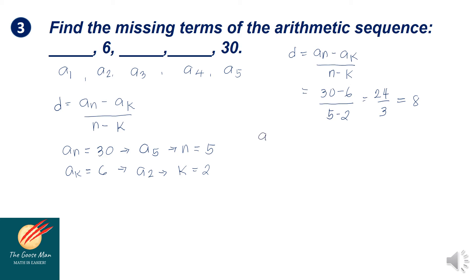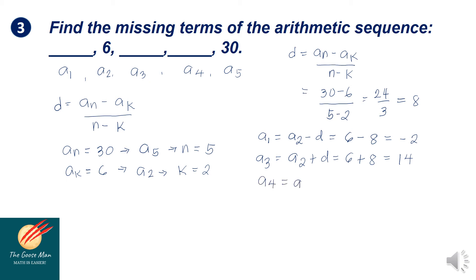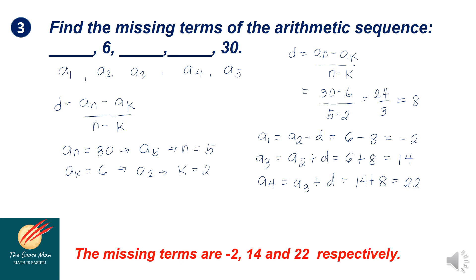To get the first term, that is a sub 2 minus the common difference: 6 minus 8 equals negative 2. Moving to a sub 3: a sub 3 equals a sub 2 plus the common difference, so 6 plus 8 equals 14. Then a sub 4 equals a sub 3 plus the common difference: 14 plus 8 equals 22. Therefore, the missing terms are negative 2, 14, and 22 respectively.